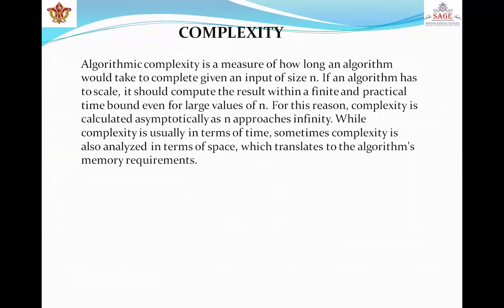Next is complexity. Algorithmic complexity is a measure of how long an algorithm would take to complete given an input of size n. If an algorithm has to scale, it should compute the result within a finite and practical time bound even for large values of n. Complexity is calculated asymptotically as n approaches infinity, while complexity is usually in terms of time. When we analyze an algorithm, we use a notation to represent its time complexity. Complexity is a measure of the amount of time or space required by an algorithm for an input of a given size.